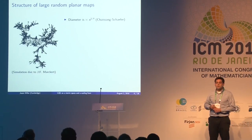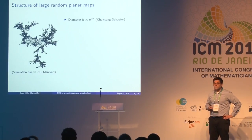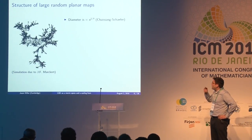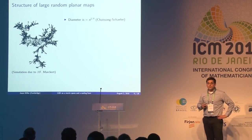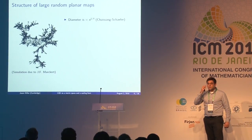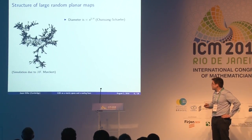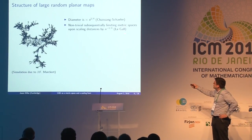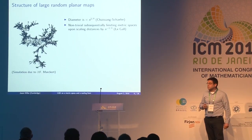The first key result, due to Chassaing and Schaeffer, says that a uniformly random quadrangulation with n faces has metric space diameter of order n to the one quarter. This tells you the right scaling factor: scale distances by n to the minus one quarter to get a continuous limit. Legall showed that you can at least take subsequential limits and get a random metric space.